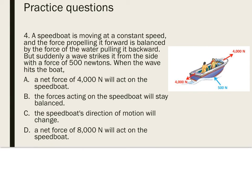Number four: a speedboat is moving at a constant speed, and the force propelling it forward is balanced by the force of the water pulling it backward. But suddenly a wave strikes it from the side with a force of 500 newtons. Before the wave hits, the speedboat is moving at constant speed because forces are balanced. When the wave hits, a sideways force of 500 newtons is suddenly applied — this sideways force is not balanced. So the speedboat's direction of motion is going to change.